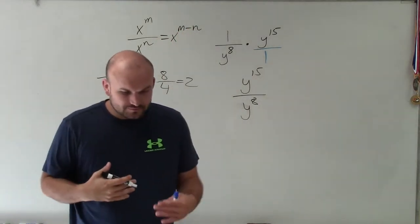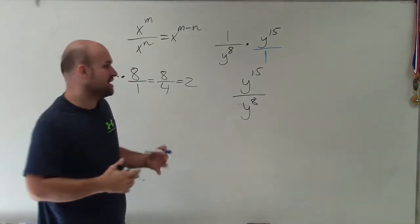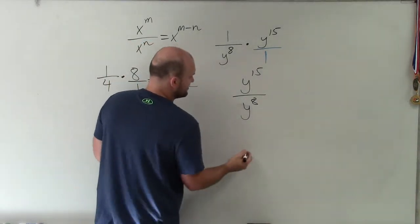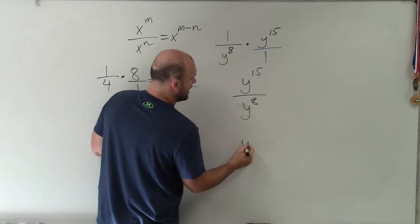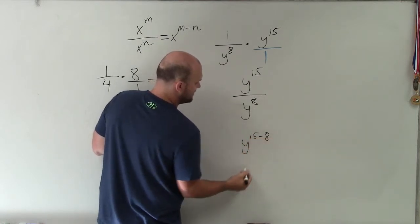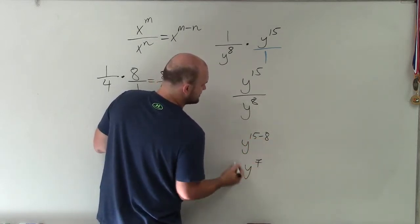So now when we're dividing exponents, we just simply subtract the powers. So therefore this can be simplified to y to the 15 minus 8, which equals y to the 7th.